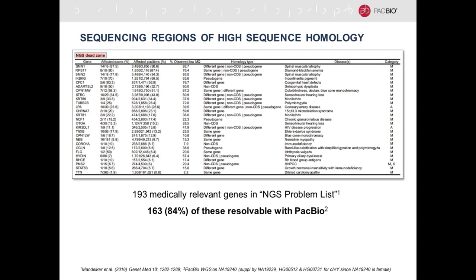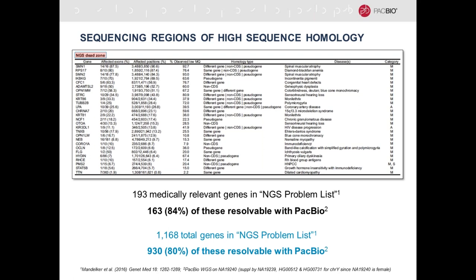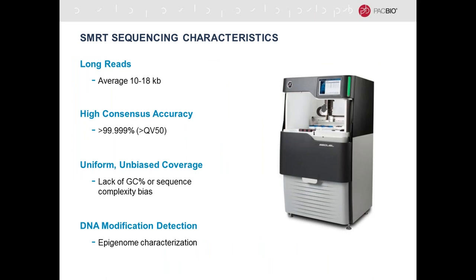It turns out that 84%—163 of these 193 genes—are resolvable with PacBio. More generally, there are well over 1,000 medically relevant or not genes in the NGS problem list, and again 80%, close to 1,000 of these, are resolved with PacBio. This is possible because of the underlying performance characteristics of single molecule real-time, or SMRT, sequencing: long reads averaging between 10 and 18 kilobases, high consensus accuracy, absence of systematic errors leading to greater than 99.999% or QV50 accuracy, lack of sequencing bias, and the ability to measure DNA modifications.